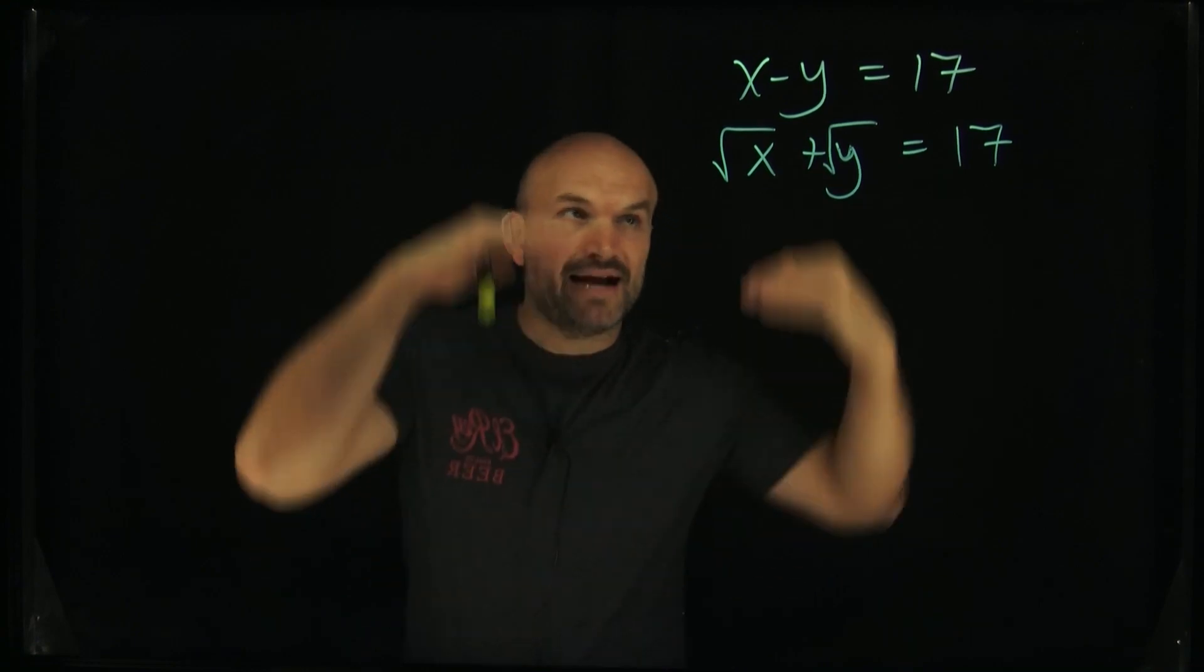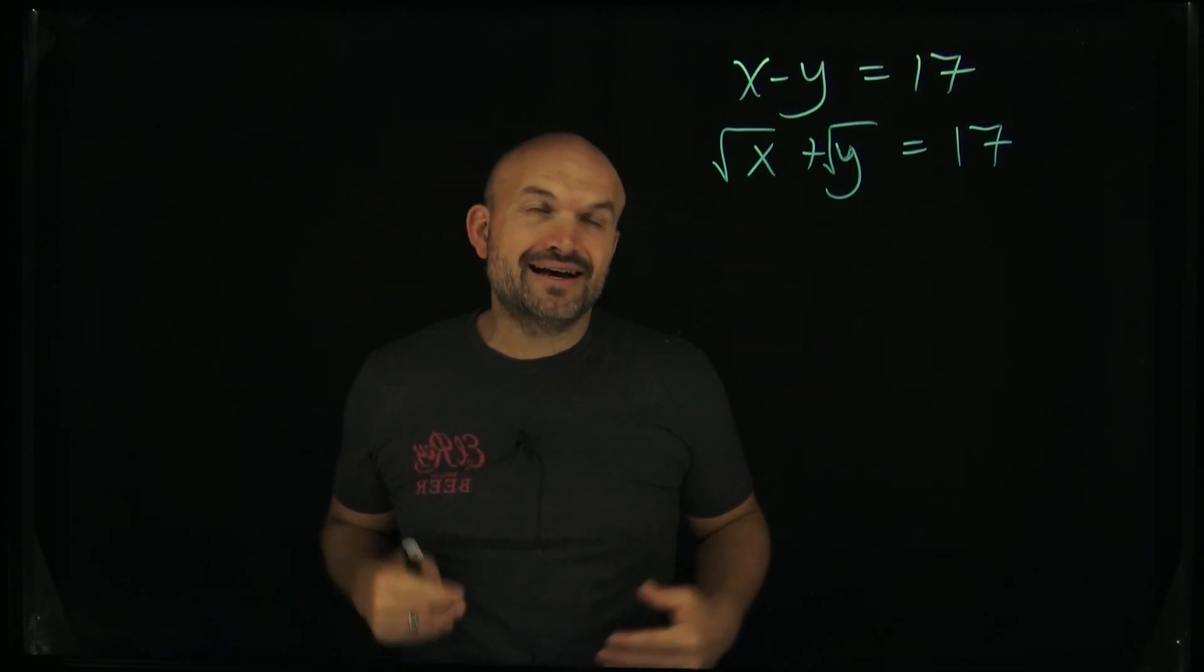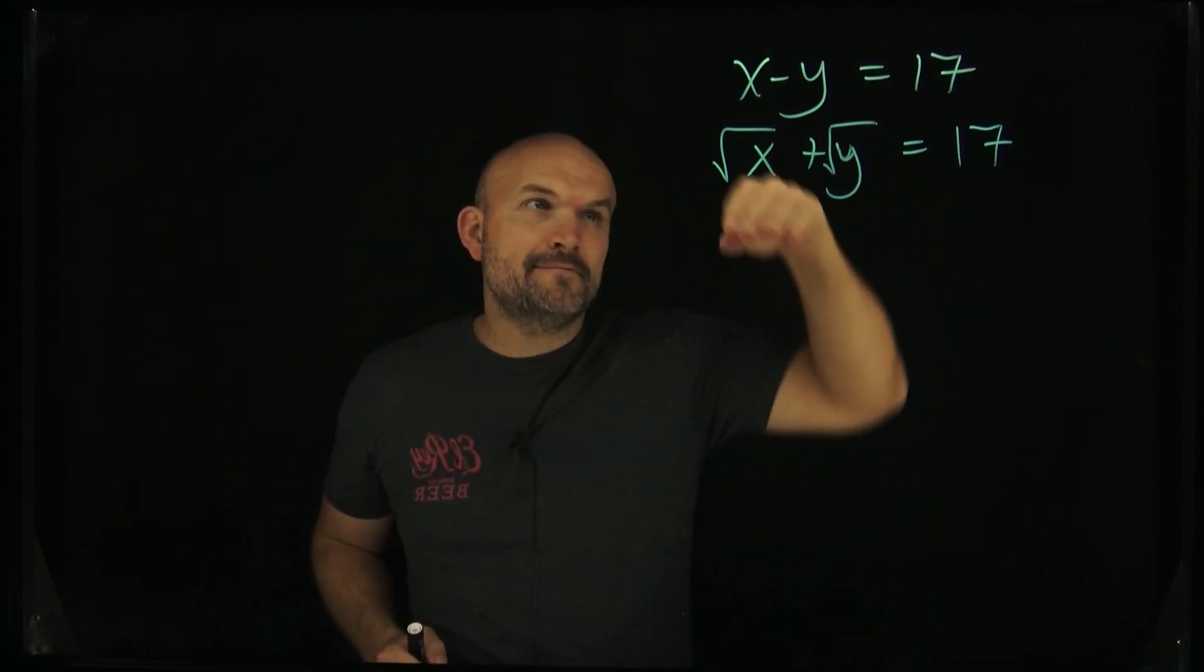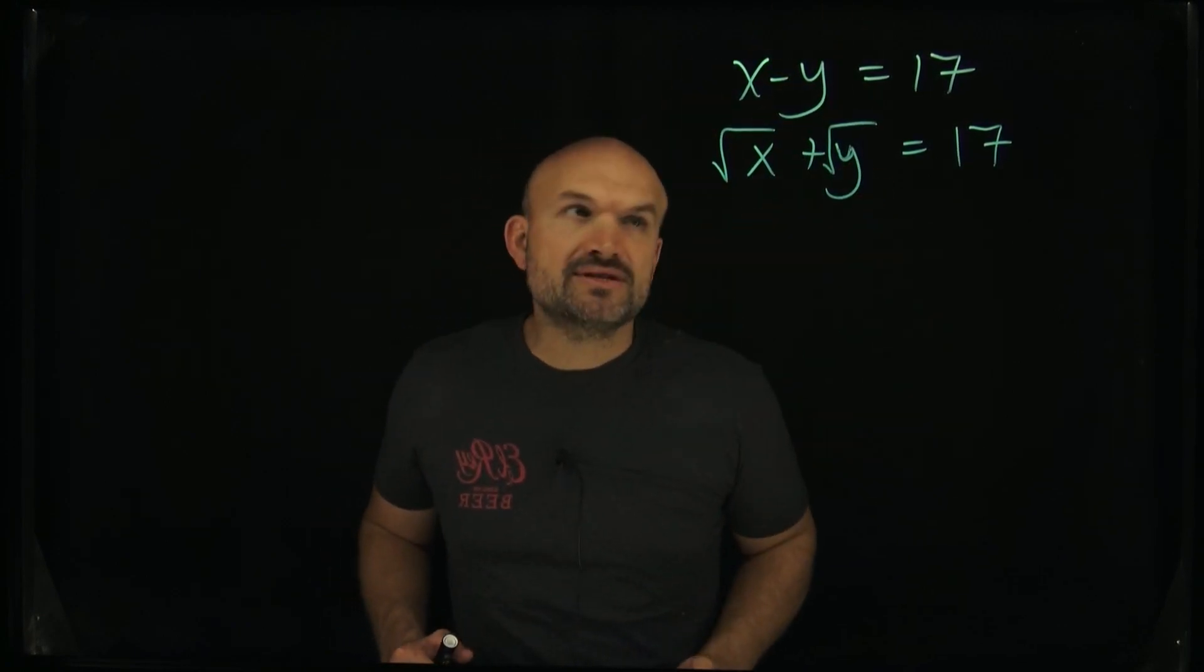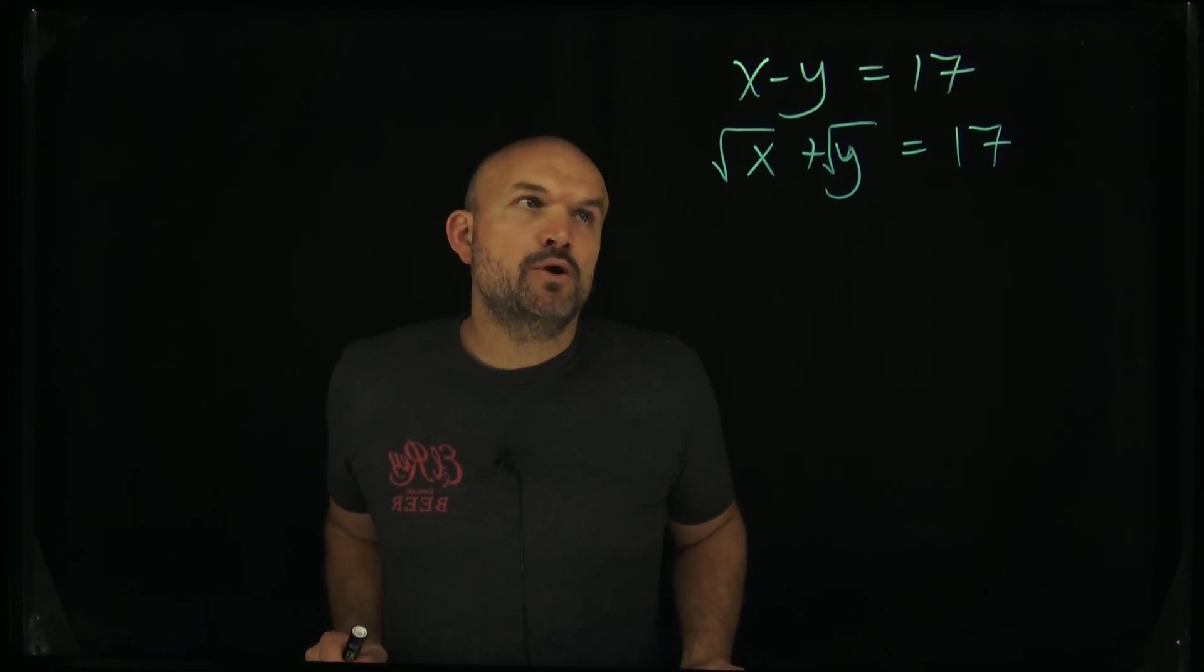The same thing if we were to apply elimination by adding or subtracting the two equations—we're going to come to an impasse because these are not like terms. This is just x and y raised to the first power, and these are the square root of x and the square root of y. So what exactly can we do?